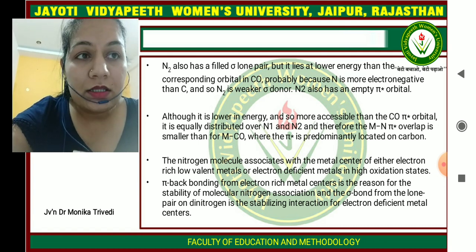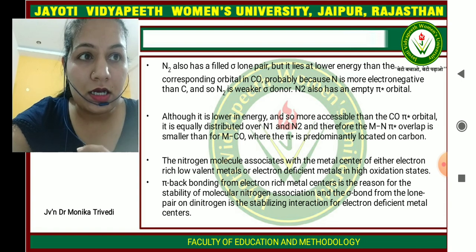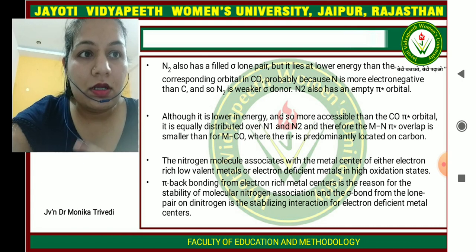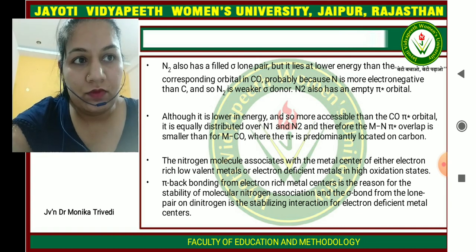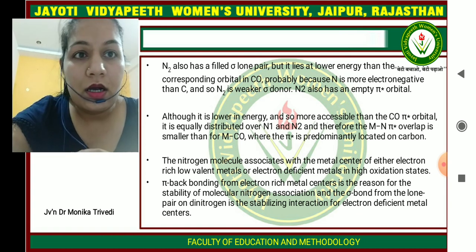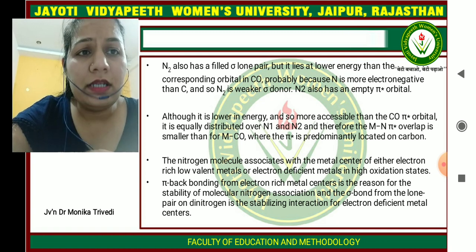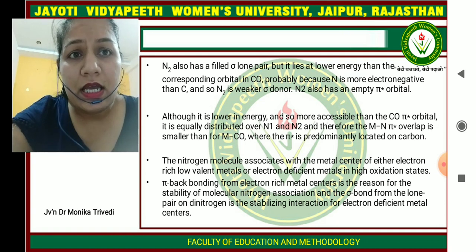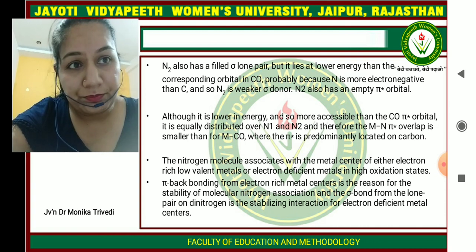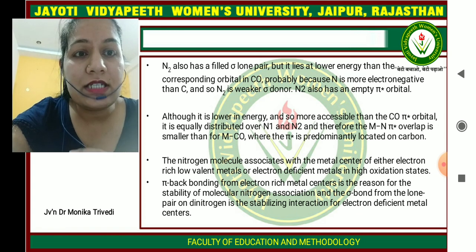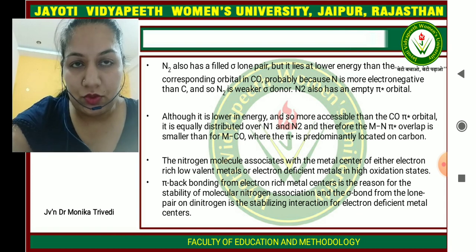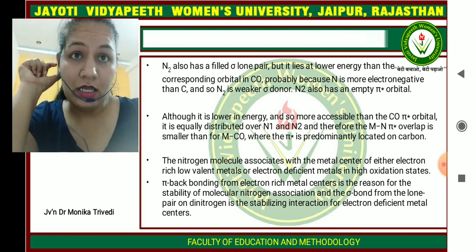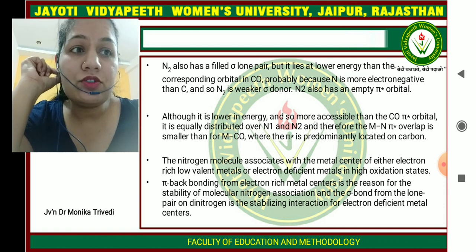Therefore, the metal-nitrogen pi* overlap is smaller than in metal-CO, where the pi* is prominently located on carbon. The nitrogen molecule associates with the metal center of either an electron-rich low-valent metal or an electron-deficient metal in a high oxidation state. Pi backbonding from an electron-rich metal center is the reason for the stability of the nitrogen molecule association, while the sigma bond from the lone pair on dinitrogen stabilizes coordination to electron-deficient metal centers.